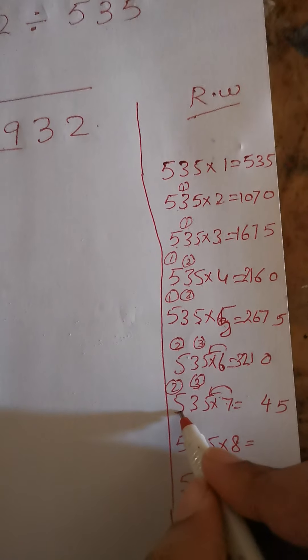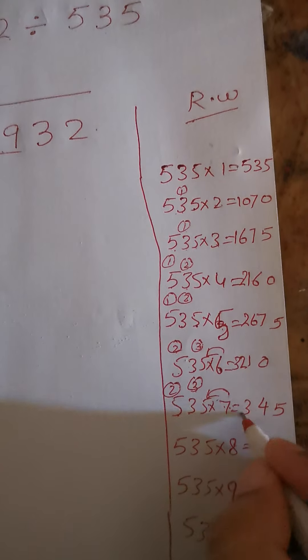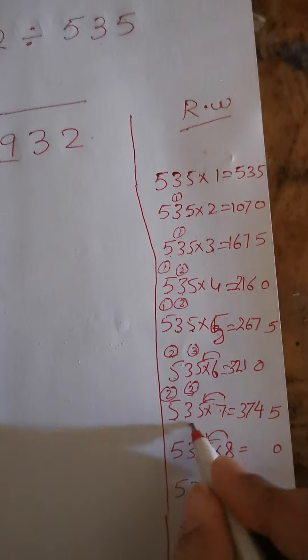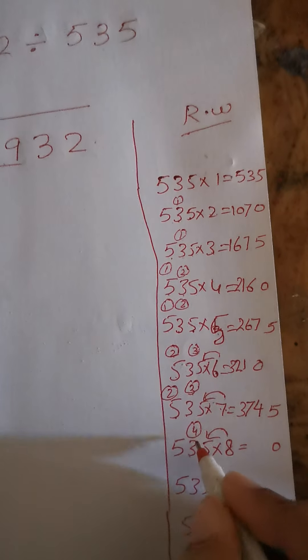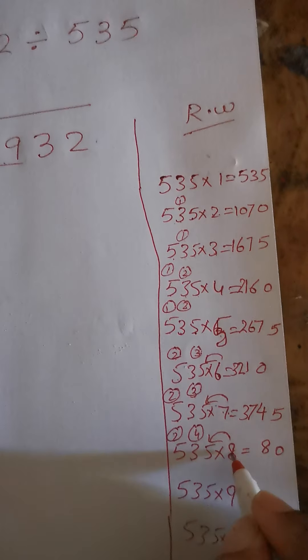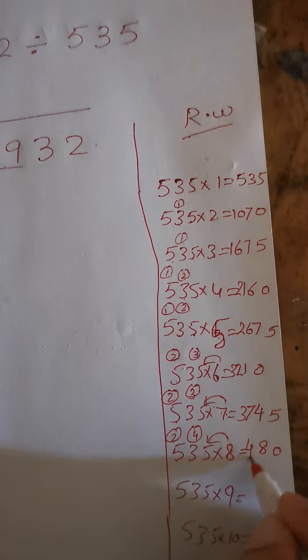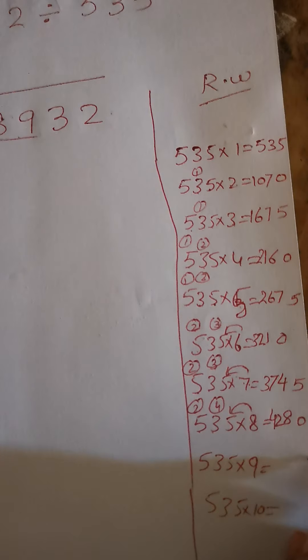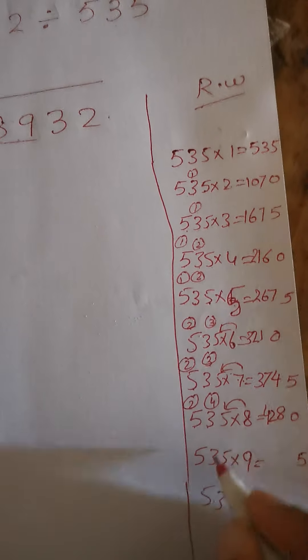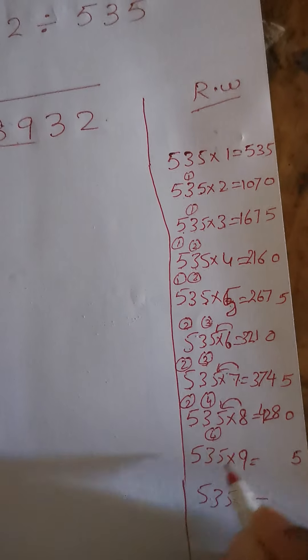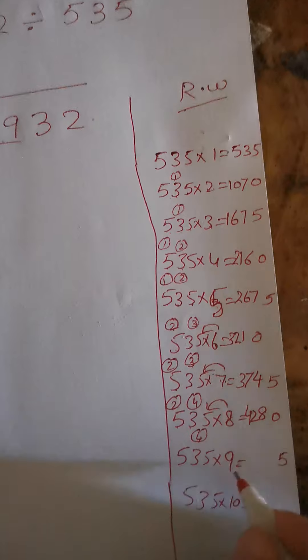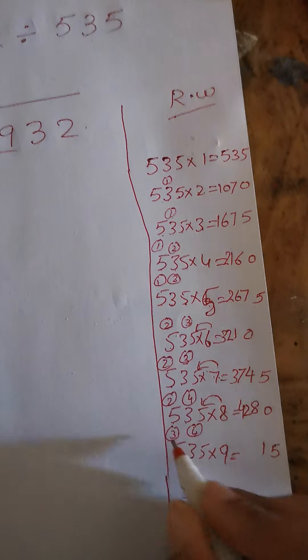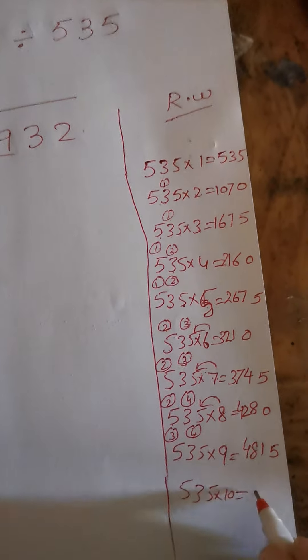For 535 times 8: 8×5 is 40, 0 with 4 carry, 8×3 is 24 plus 4 is 28, 8×5 is 40 plus 2 is 42. That's 4280, still lesser. For 535 times 9: 9×5 is 45, 5 with 4 carry, 9×3 is 27 plus 4 is 31, 9×5 is 45 plus 3 is 48. That's 4815. With 535 times 10, we would add a zero.